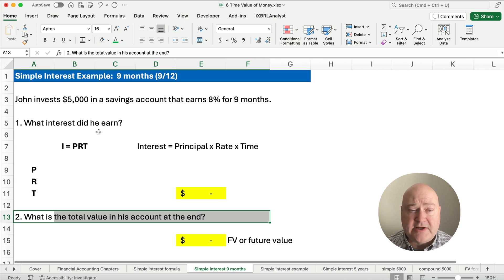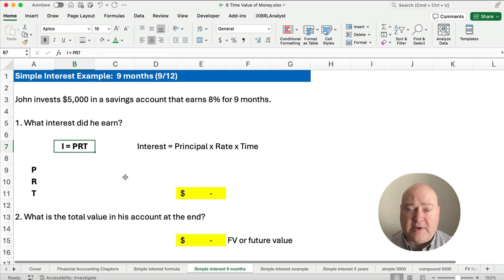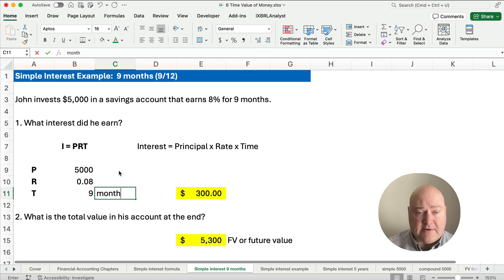What interest did he earn is our formula: I equals PRT or interest equals principal times rate times time. So what's the principal amount? That's going to be $5,000. What is R or the rate, the rate of return or the interest rate? That's going to be 8%. Now, 8% in decimal form is .08, so use the decimal form .08. The time is going to be 9 months. I'm going to type in 9 and put months beside it here.